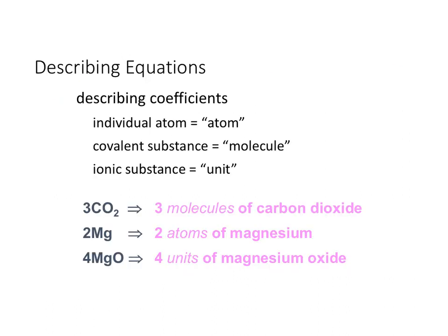Something you may have noticed in the last problem is that when there were descriptors of the substances, there were the words 'atom,' 'molecule,' and 'unit.' You'll need to utilize these words to go from formula into word form — the opposite of what we just did. When talking about individual atoms like copper and aluminum, you call them atoms. If you're dealing with a covalent substance, you use 'molecule' as a descriptor. And when using ionic substances, you use 'unit.'